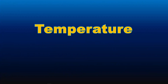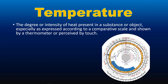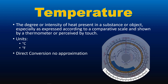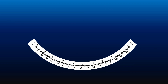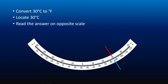Now let's take a look at temperature conversion. Temperature is defined as the degree or intensity of heat present in a substance or object, especially as expressed according to a comparative scale. Temperature units that can be converted using CRP5 are degrees Celsius and degrees Fahrenheit. Temperature conversion is a direct conversion — no approximation is required. The formula: degrees Celsius equals degrees Fahrenheit minus 32, divided by 1.8; and degrees Fahrenheit equals degrees Celsius times 1.8, plus 32. Example: convert 30 degrees Celsius — locate 30°C and read the answer on the opposite scale: 86 degrees Fahrenheit.